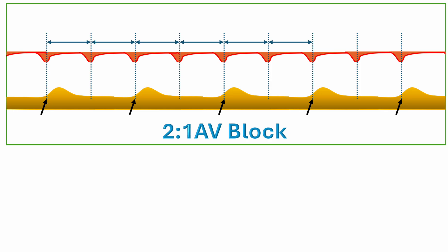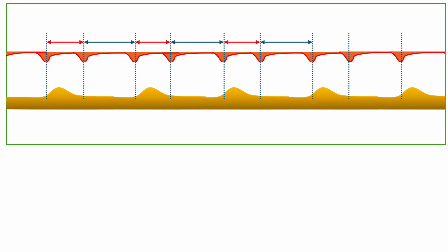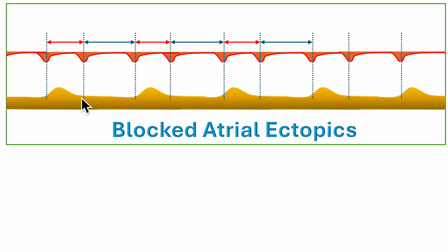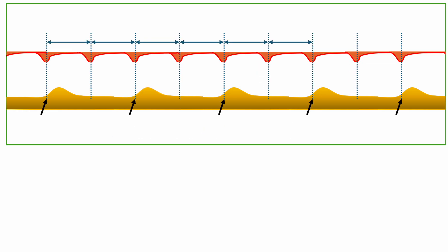If we have atrial contractions coming in couplets — where one atrial beat comes prematurely and is a blocked atrial ectopic, and the other is a conducted atrial-to-ventricular beat — then this premature atrial ectopic gets blocked with no ventricular contraction. Then a normal sinus beat, and a blocked atrial ectopic again. This brings us back to the 2:1 AV block pattern.